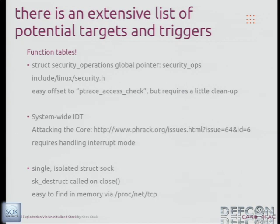One of the first function tables I played with was security_ops, since I was familiar with the Linux security module interfaces. That's basically for SELinux, AppArmor — other LSMs use the security_ops function table for high-level actions. I liked replacing the ptrace access check because it was at the top and didn't require too much cleanup after use. There's also the IDT — there's a good Phrack article on that. But my favorite now is using a single sock struct. If you can create a socket, you've got a destructor called when the socket goes away. If you can overwrite that function pointer, when you close the socket it'll run the code you wanted. And it's easy to find because the kernel exports it for you to see.